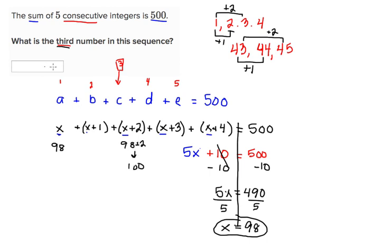Or if you felt more comfortable, you could have just continued counting on from the 98. So 98, 99, 100, 101, 102. All of these numbers would add up to have a sum of 500.